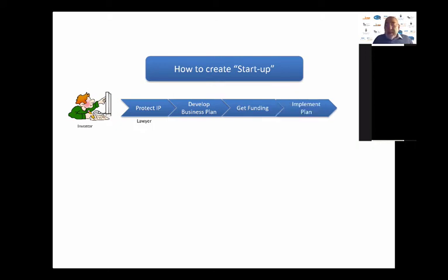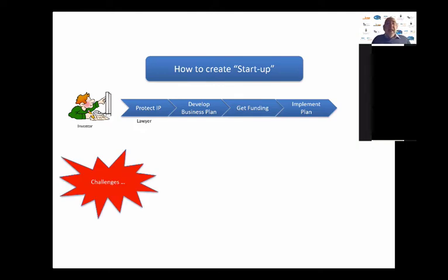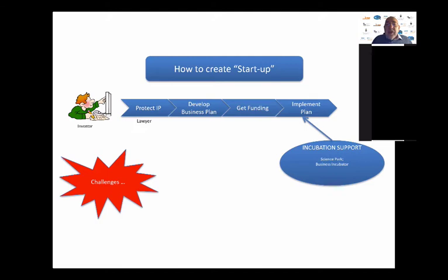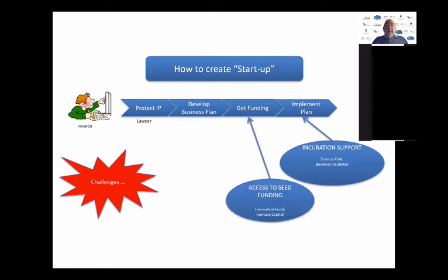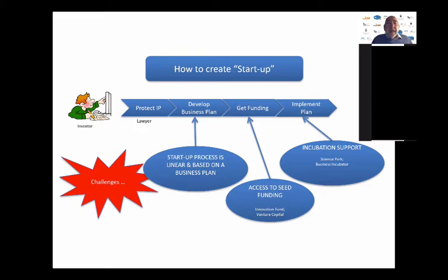And then you implement that plan. The problem with this linear model of creating a startup is that to implement the plan, you would typically need some support — it's not easy just to go and open a workshop somewhere. You would need to find a place in some science park or business incubator to help you launch and grow your business. It's also very difficult in many cases to access funding, whether venture capital or innovation funding. Your startup is based on this business plan.